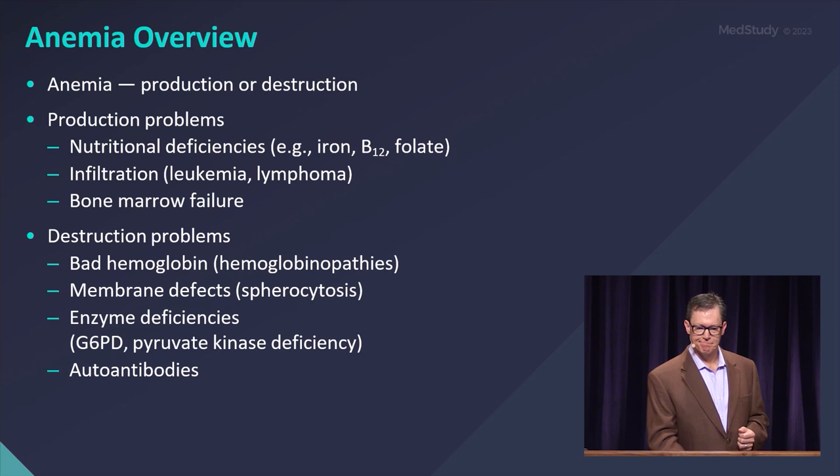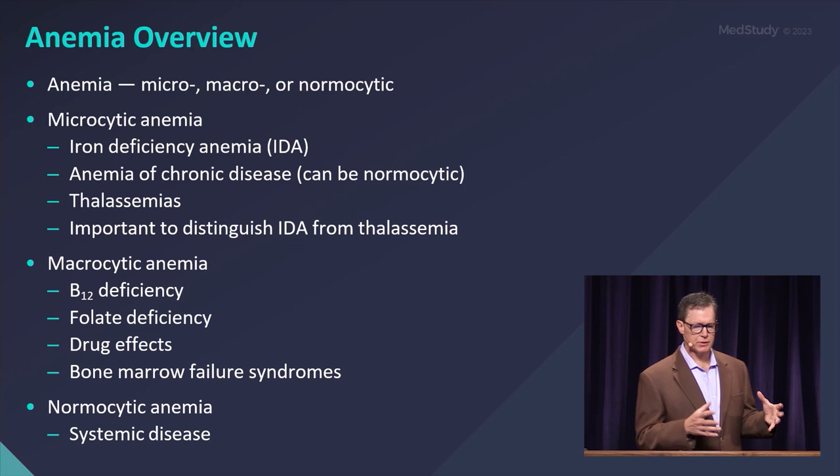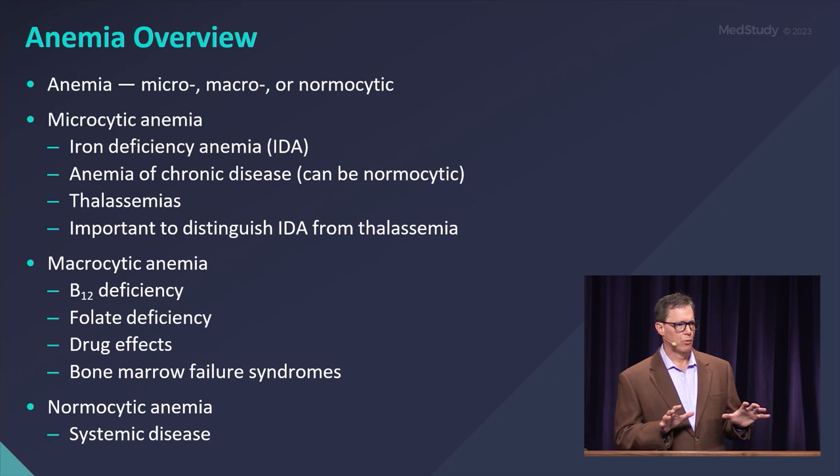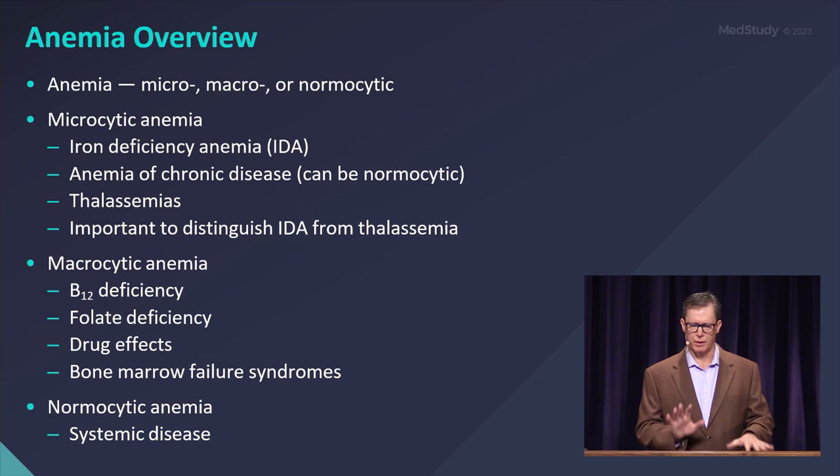Another way to classify anemias, and this is really common in textbooks, is to think about anemias based on their size. So microcytic anemias, macrocytic anemias, and normocytic anemias. Microcytic anemias include things like iron deficiency, anemia of chronic disease, and thalassemias — and we'll spend a little bit of time comparing and contrasting those.